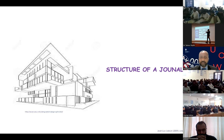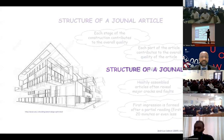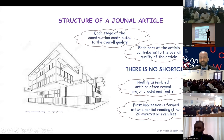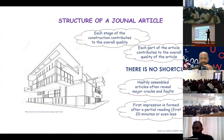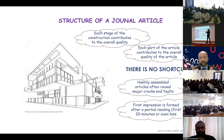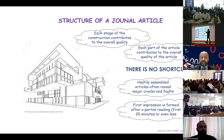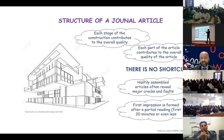If you hastily assemble an article from here and there, it will reveal major cracks — it won't be a good article. There are no shortcuts. As an associate editor of the Australian Journal of Structural Engineering, I need to decide quickly whether an article will go to review or not. Remember: 70 percent of articles do not go to the reviewer. Associate editors and editors reject about 70–80 percent right away.